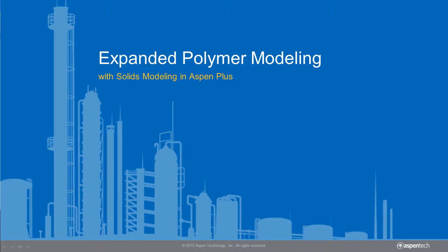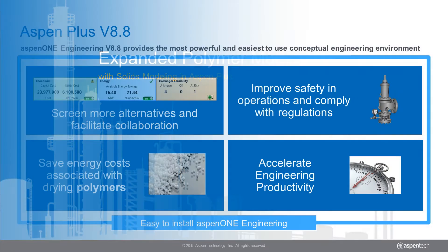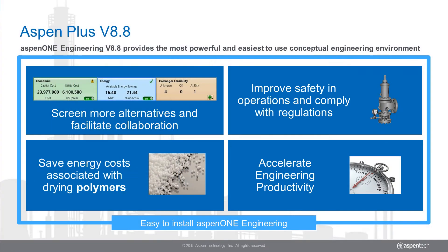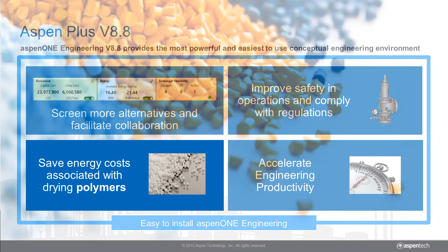Aspen Plus, the industry's leading chemical process optimization software, is continually upgraded to improve performance and add new functionality. This ensures that you have an improved experience and access to cutting-edge accuracy with the latest innovations in chemical process modeling.